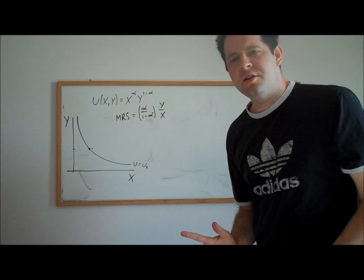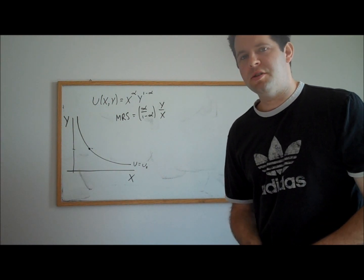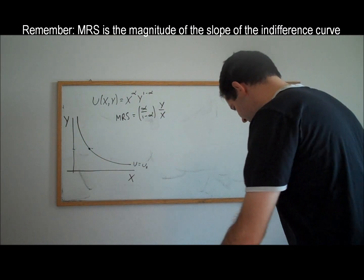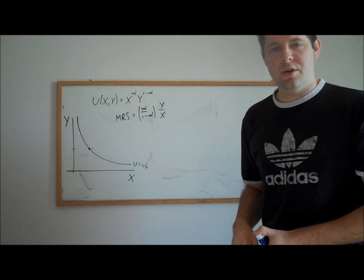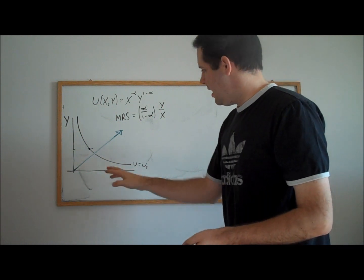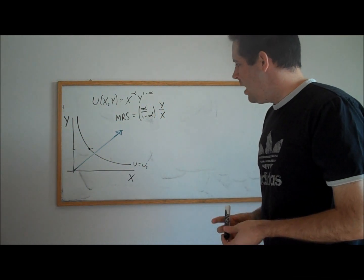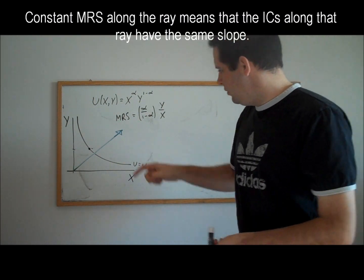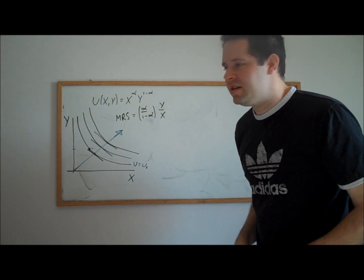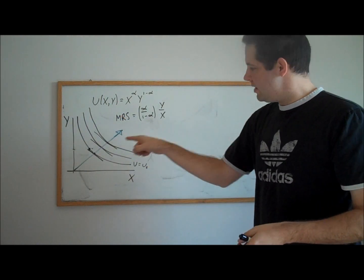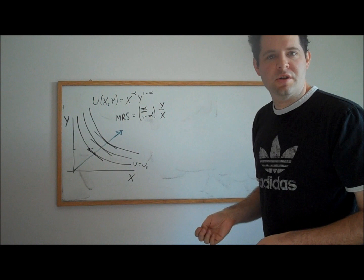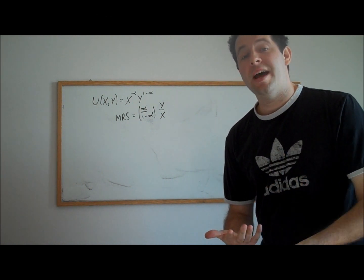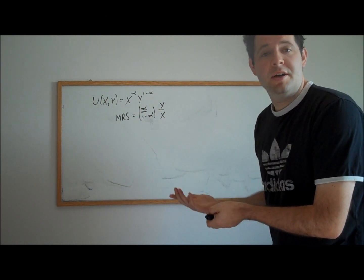So we have our expression for the Cobb-Douglas marginal rate of substitution. One key thing to note is that the MRS is constant for a given ray out of the origin. A straight line from the origin gives a constant y over x ratio, which means all indifference curves passing through points on that line have the same slope. Cobb-Douglas utility therefore looks like a parallel shift of indifference curves along rays out of the origin.